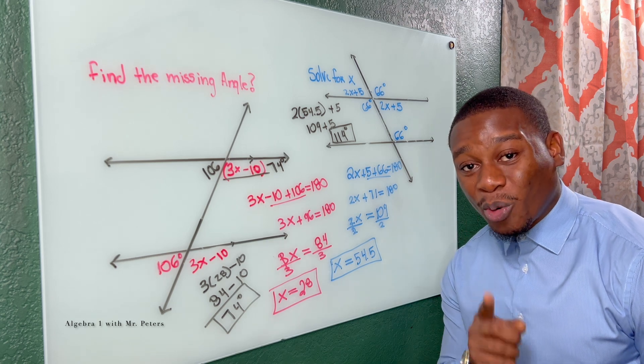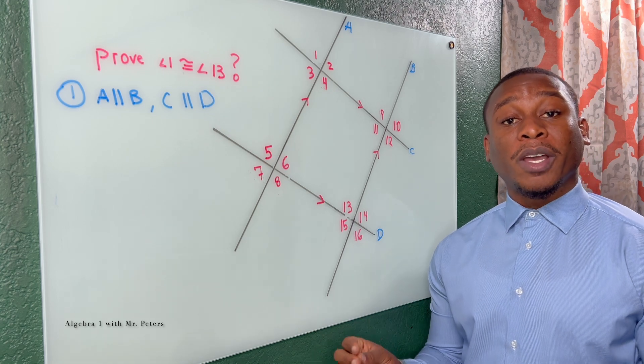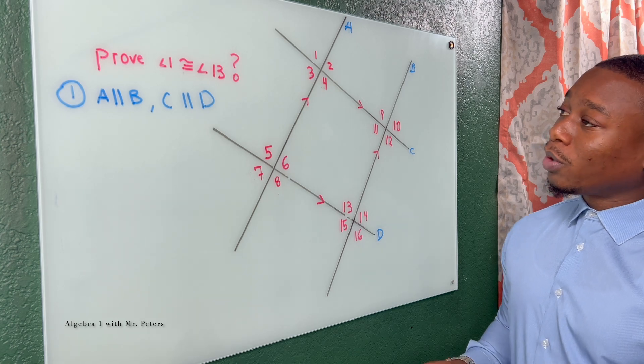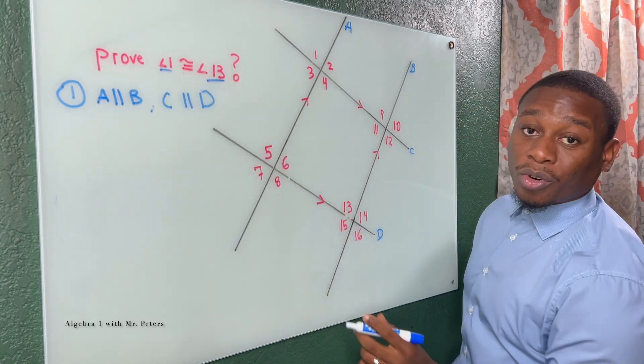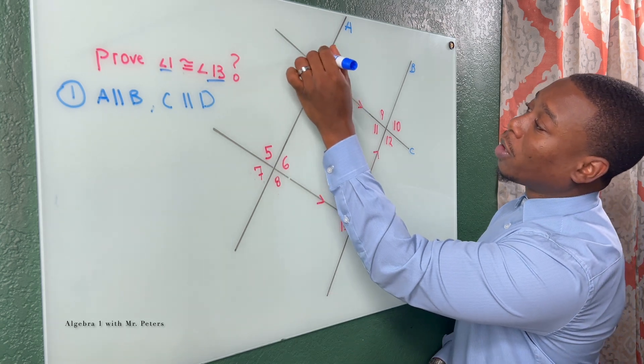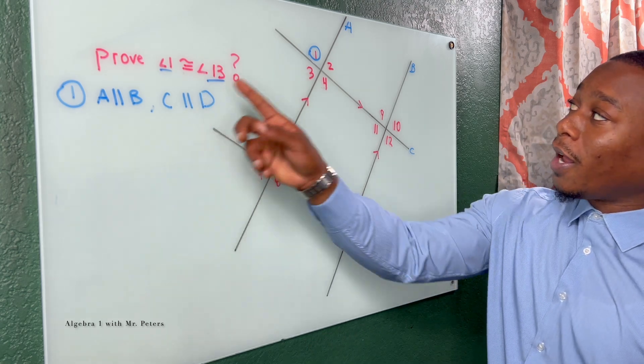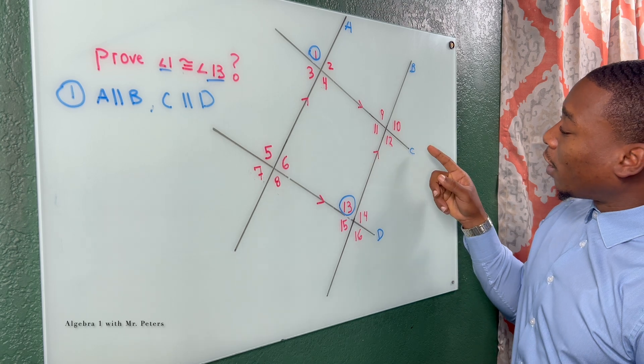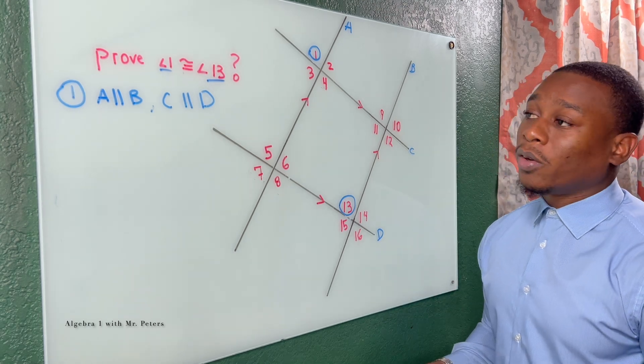And with that, we're going to the last example of this video. Last problem of this video, and if you found this video helpful, we're going to ask that you smash the like button for us. So they want us to prove that angle 1 and angle 13 are congruent. They're the same. So we're talking about this angle here and this angle here. And all they're giving us is that line A and B are parallel, just like line C and D are parallel. So how can we prove that these two angles are the same?